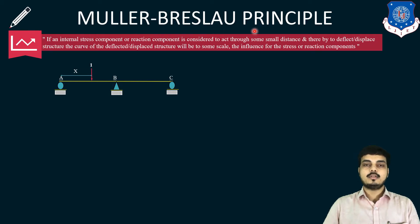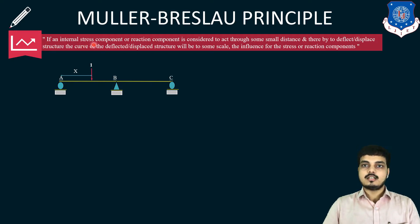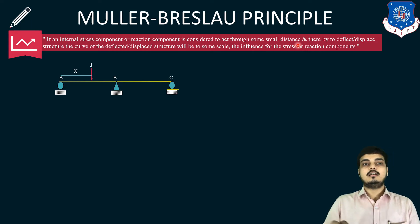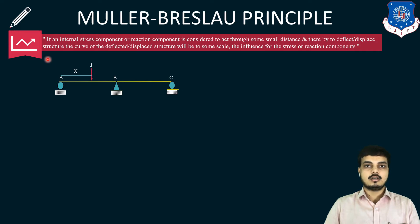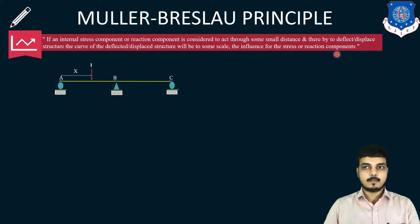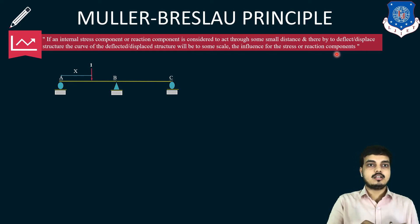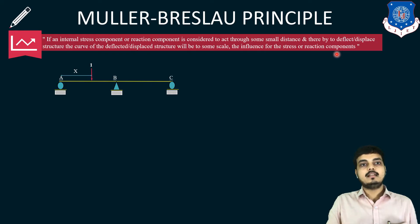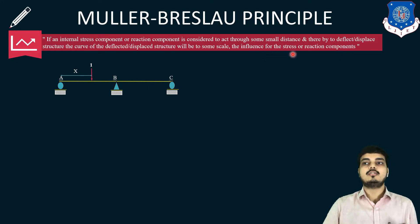The first theory is the Müller-Breslau principle. This is a very important theory, and with the help of this theory and its equation we will be solving the entire chapter. Now, if an internal stress component or a reaction component is considered to act through some small distance, there will be a deflected or displaced structure. The curve of the deflected and displaced structure will be, to some scale, the influence line for that stress or reaction component.